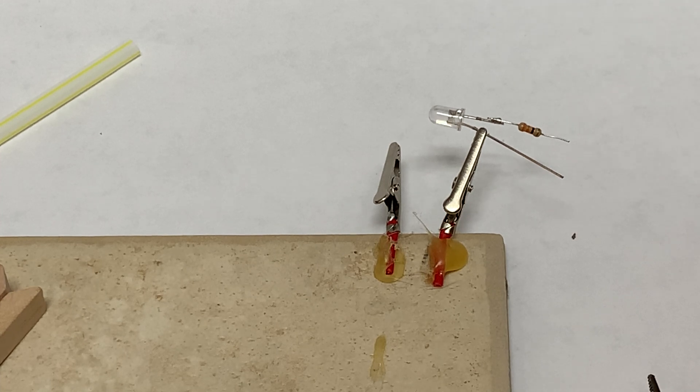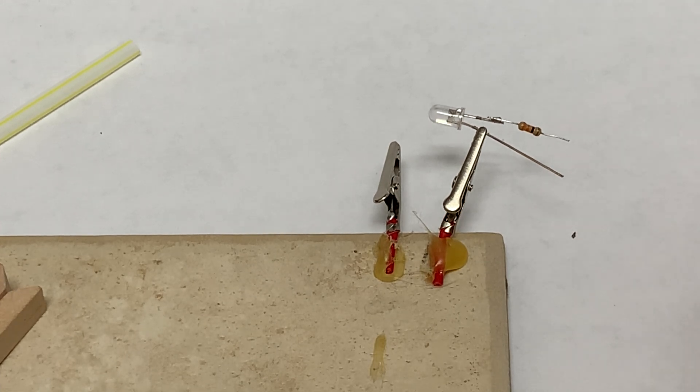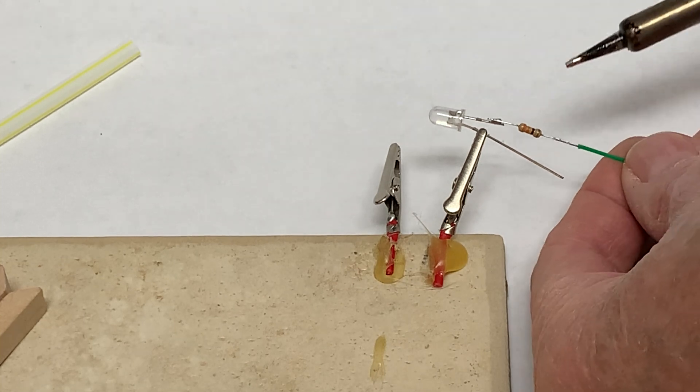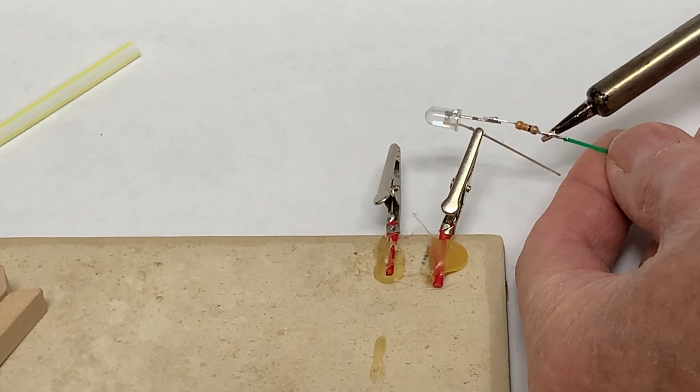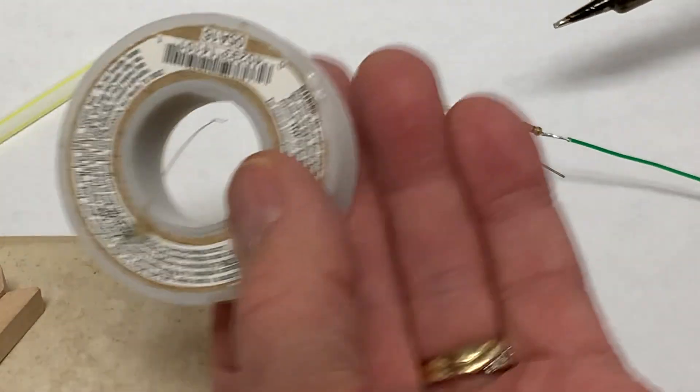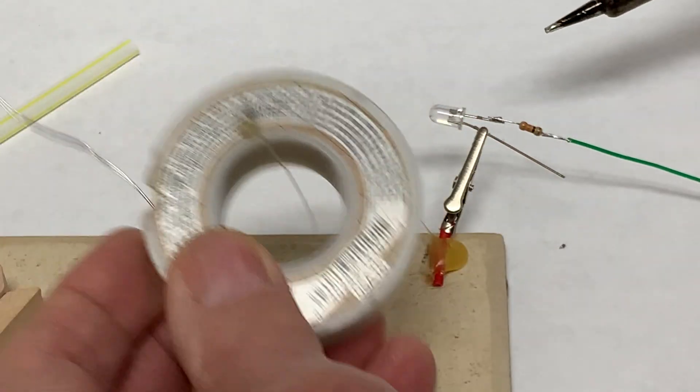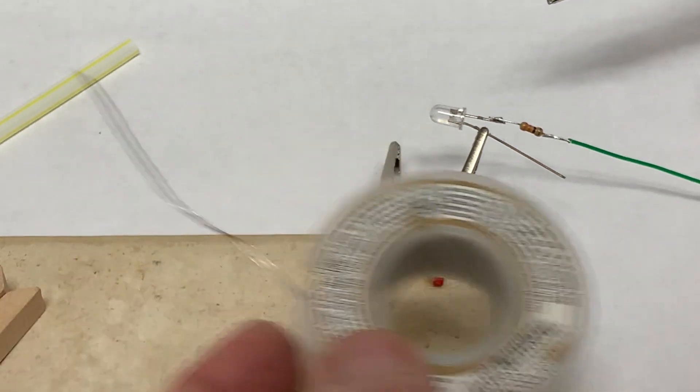For consistency, I like to use a green wire for the negative lead and the red for positive. Be sure to use rosin core solder, by the way, not the acid core.